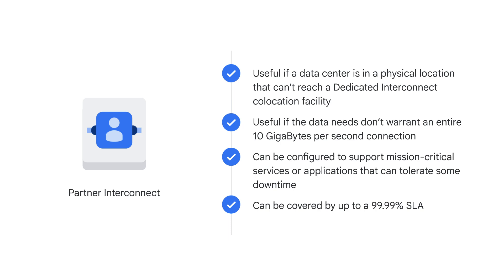As with dedicated interconnect, if these connections have topologies that meet Google's specifications, they can be covered by an SLA of up to 99.99%. But note that Google isn't responsible for any aspects of Partner Interconnect provided by the third-party service provider, nor any issues outside of Google's network.